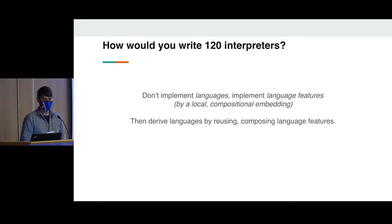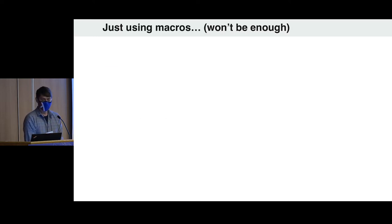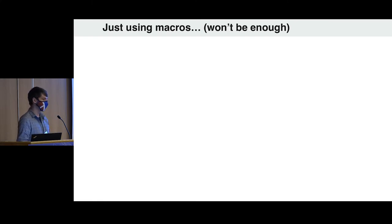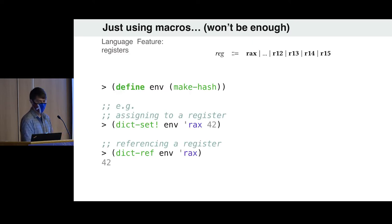That way I can kind of derive all of the languages by taking all of these language features, composing them together to form a language, and from that derive an interpreter for any particular language. This is the approach the Racket folks have been calling language-oriented programming — build up individual language features and compose them. I'm going to show you how this differs from just using macros.